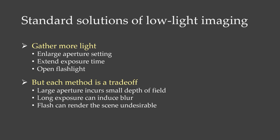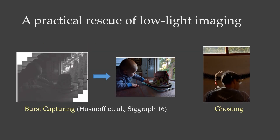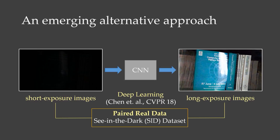But each method is a trade-off. Another approach to rescue low-light imaging is to use fast capturing. However, it generally suffers from ghosting effects when capturing dynamic scenes in the presence of humans, vehicles, etc. An alternative imaging approach is to employ a neural network that automatically learns the mapping from short-exposure images to their long-exposure counterparts.